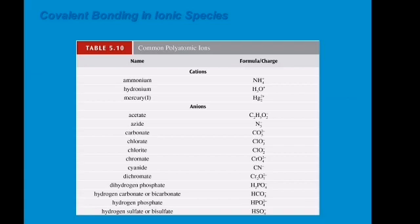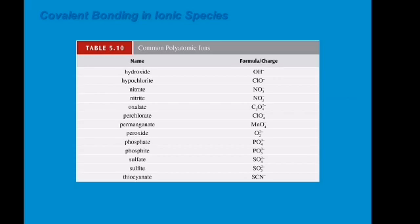For negatively charged polyatomic ions, we have acetate, azide, carbonate, chlorate, chloride, chromate, cyanide, dichromate, dihydrogen phosphate, hydrogen carbonate (bicarbonate), hydrogen phosphate (biphosphate), hydroxide, hypochlorite, nitrate, nitrite, oxalate, perchlorate, permanganate, peroxide, phosphate, sulfite, and sulfate.